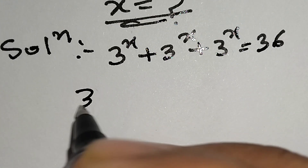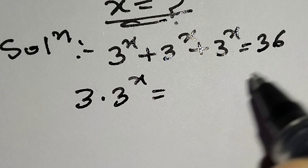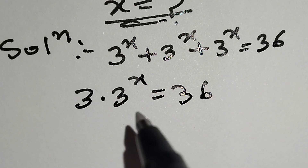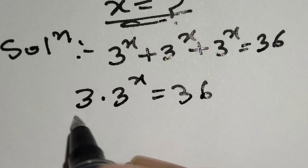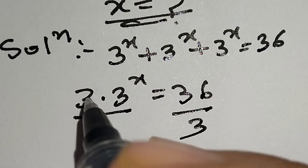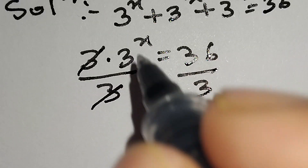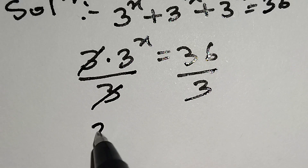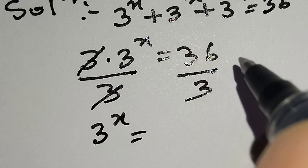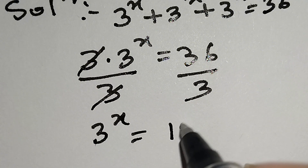Here, 3 times 3 to the power x is equal to 36. Now we will divide both sides by 3. This 3 and this 3 cancel out. Here we remain with 3 to the power x is equal to 36 over 3, which is equal to 12.